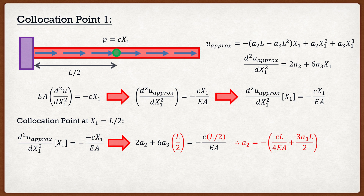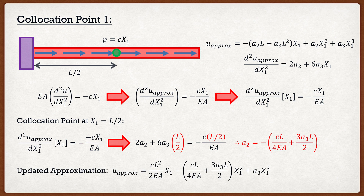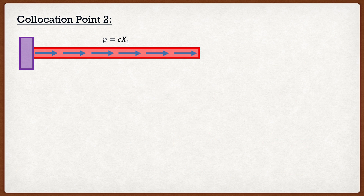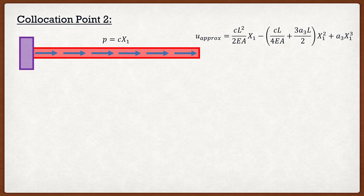This allows us to solve for a2, giving a2 equal to negative cL divided by 4EA plus 3*a3*L divided by 2. We update our approximation, and though it looks a bit more complex, we now have only one unknown: a3. We simply pick another collocation point to solve for it.